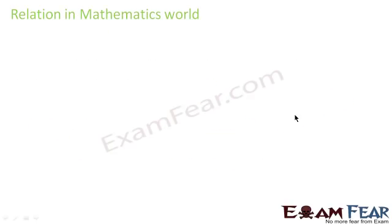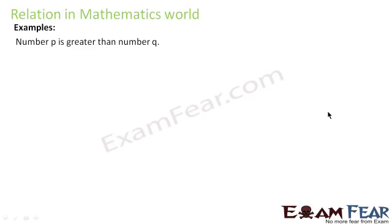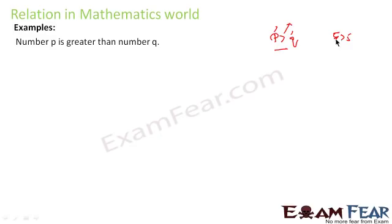Now let's see what relation means in the mathematical world. If you say 'number P is greater than Q,' that is an example of a relationship, because there are more than one entity — P and Q — and there is a pattern: all numbers where P is greater than Q. For example, 5 is greater than 4, so P is 5 and Q is 4.